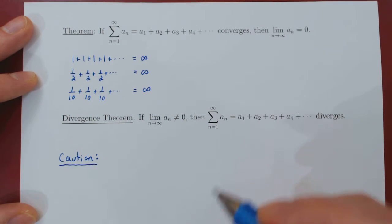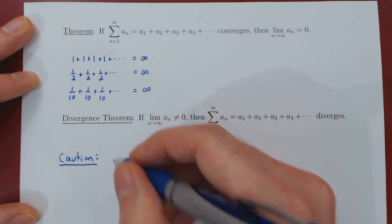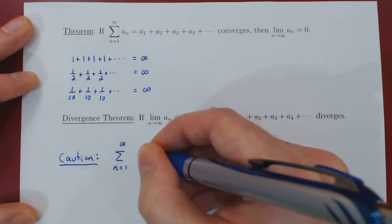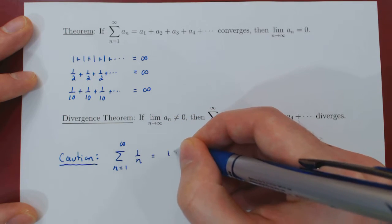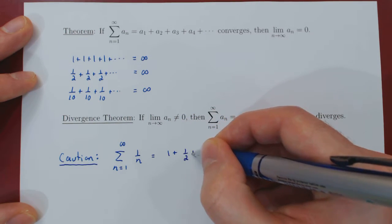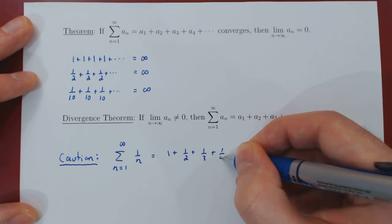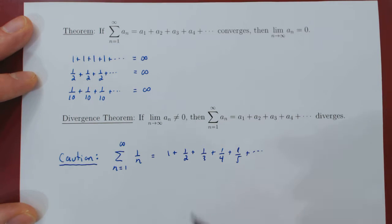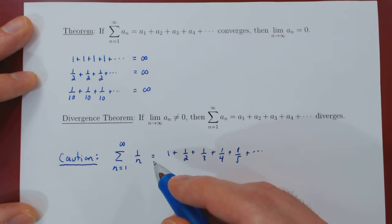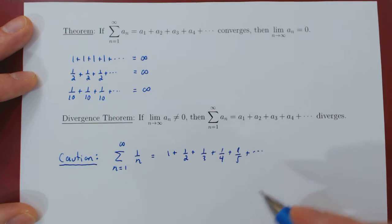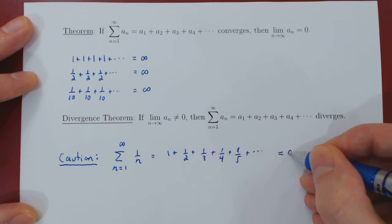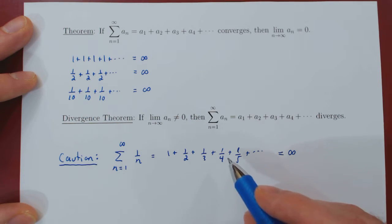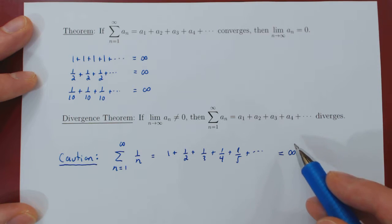To prove this, let's consider two simple examples. The first one: the sum from 1 to infinity of 1 over n. So this is 1 plus 1 over 2 plus 1 over 3 plus 1 over 4 plus 1 over 5 and so on. This is not obvious right now, but we will prove later on that this series actually blows up to infinity. If you keep adding the reciprocal of the positive integers forever, the sum will grow out of bounds and in the limit blow up to infinity.